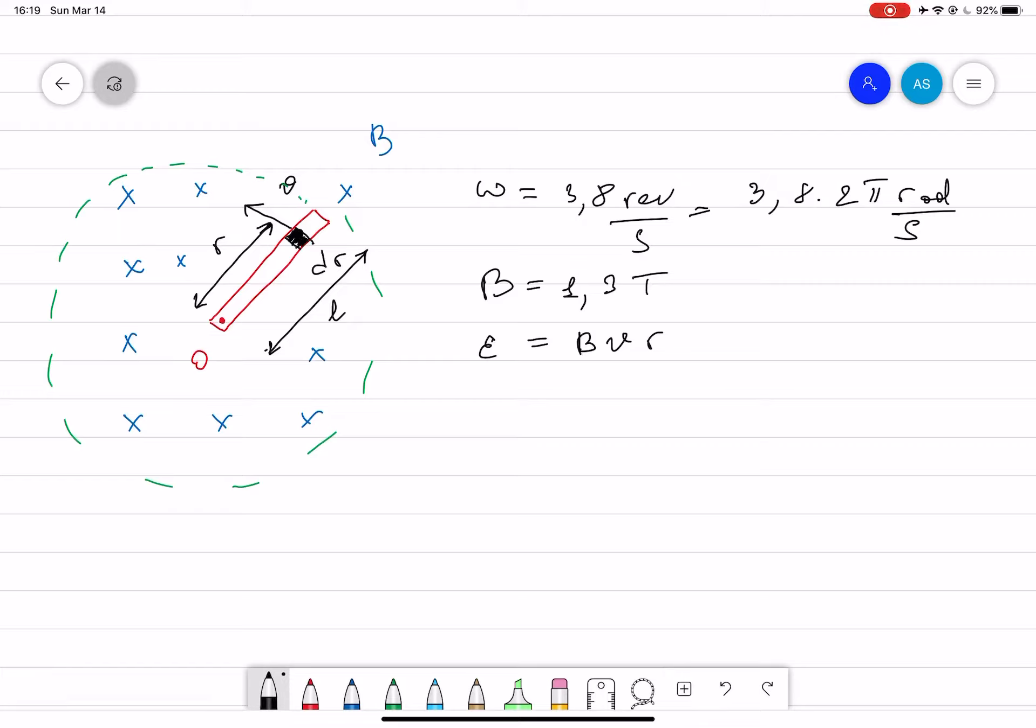The general formula is EMF equals B v l, but we're looking at a small piece of it, so we'll integrate to find the total EMF over length l.